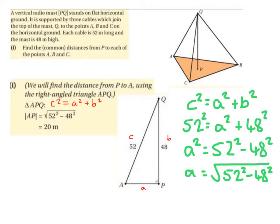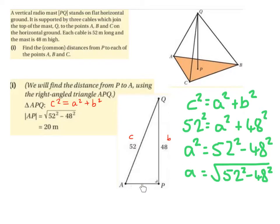Therefore, we can use Pythagoras' theorem, which is C squared equals A squared plus B squared. So we label our triangle, which I've drawn out here separately. The 52 is going to be the longest side, so that's going to be labelled as C. Then the other sides get labelled A and B. PQ is 48, and we don't know what AP is, so we can just leave it as A — AP is what we're trying to find.